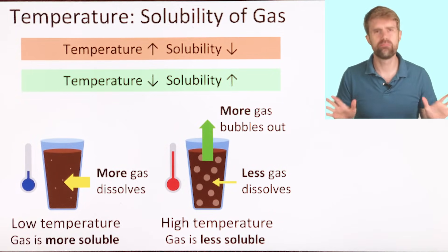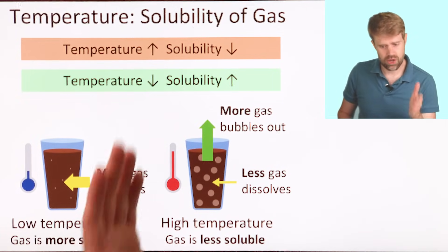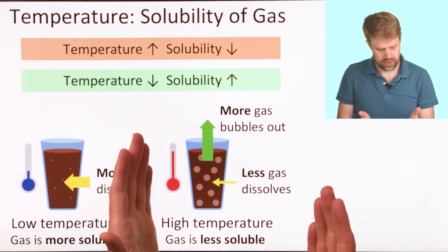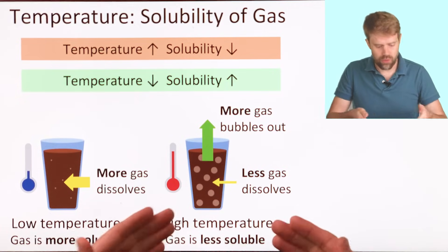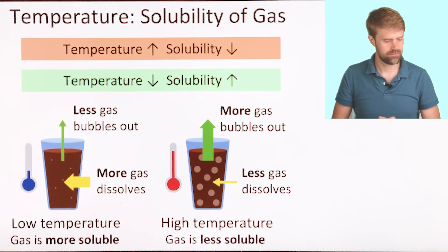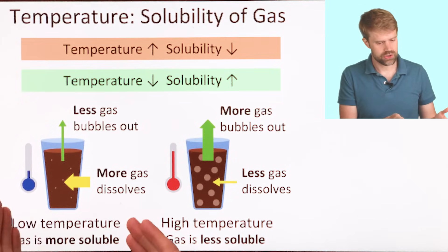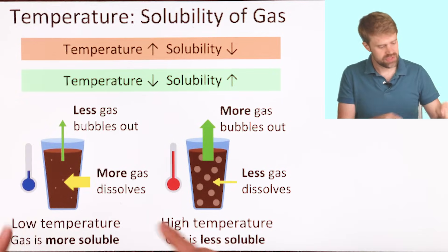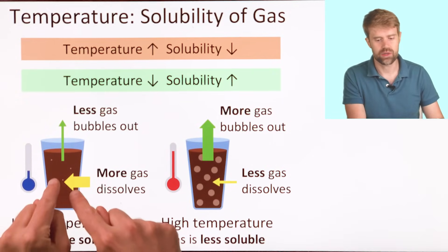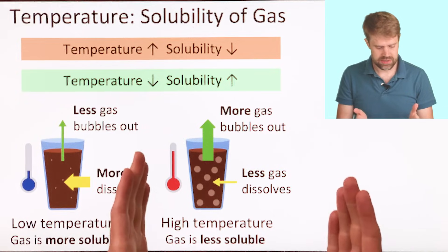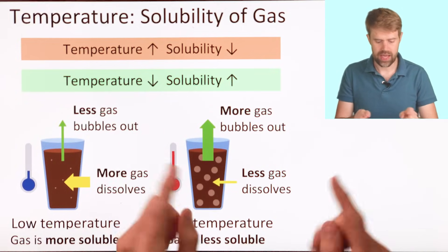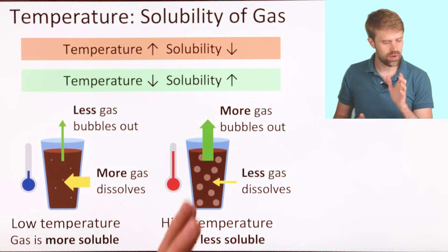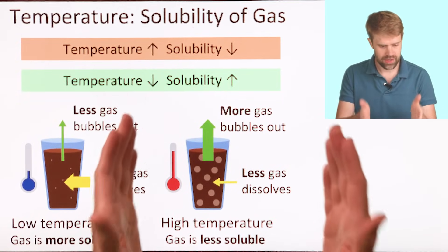What about the bubbles? When gas can't dissolve anymore, it bubbles out. At high temperature, less gas can dissolve, so more of it is going to bubble out. And at low temperature, more gas dissolves, so less of it is going to bubble out — it stays dissolved in the liquid. So as temperature increases, less gas dissolves. The gas that can't dissolve anymore is going to bubble out, and that's why soda is more bubbly at higher temperature.